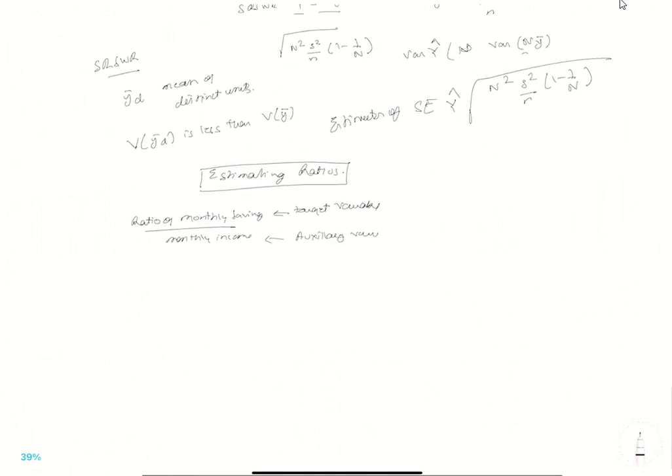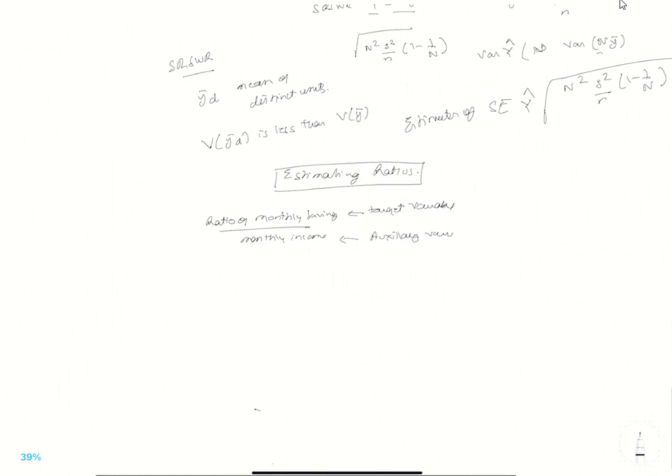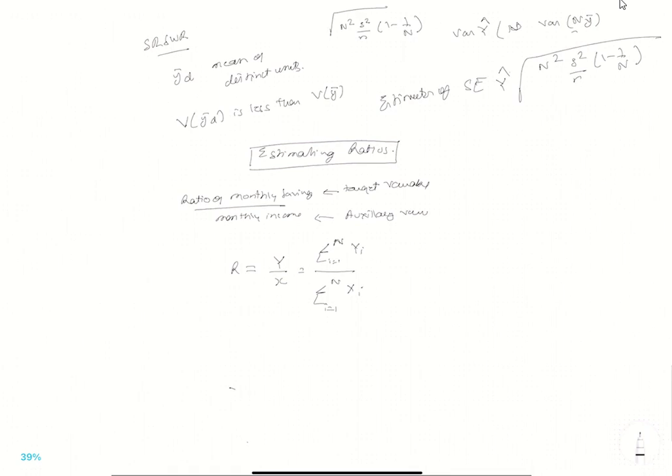So how do we calculate the ratio? Ratio is just going to be y by x which is going to be i equals 1 up to n, capital N in that case because we are talking about population. yi 1 to n xi. So the population total of variable y and population total of variable x.